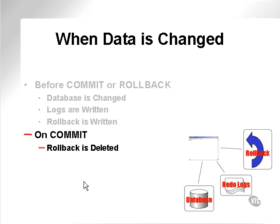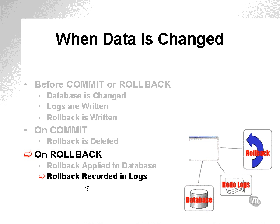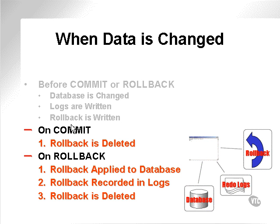When you execute a commit command, the rollback is deleted and nothing else is done. When you execute a rollback command, the rollback will be applied to the database, it will be recorded in the redo logs, and then the rollback is deleted. You can see what I mean by commit being preferable to rollback, since commit involves a single process and rollback involves three separate processes, including the process that is done when commit is executed.